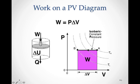Staying with an isobaric process but going in reverse — cooling the gas — we get a decrease in volume. Since it's isobaric, we also get a decrease in temperature, going from one isotherm to another. The work is no longer negative; since we're compressing, the work is positive. We calculate it the same way: the area under the curve using constant pressure times the change in volume.